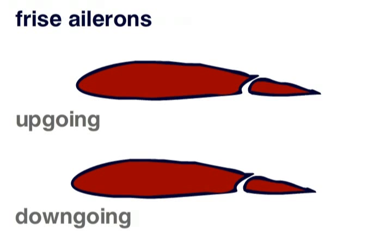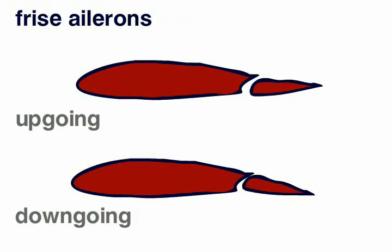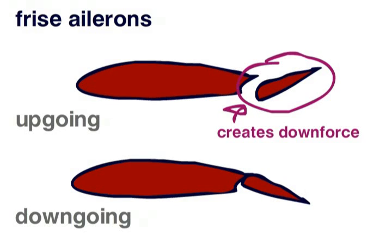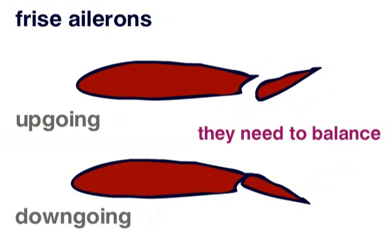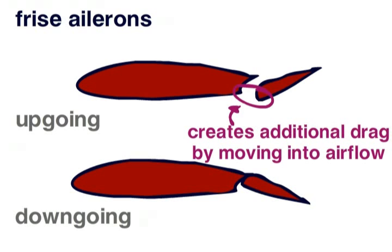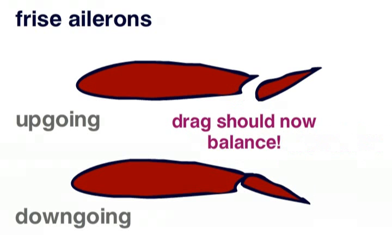We can minimize the effect of adverse yaw by using freeze ailerons. Since the up-going aileron creates less lift and therefore less induced drag than the down-going aileron, we need to create additional drag here. On freeze ailerons, this is achieved by moving some of the aileron into the airflow when it is deflected upwards. This will then balance the drag on both ailerons.